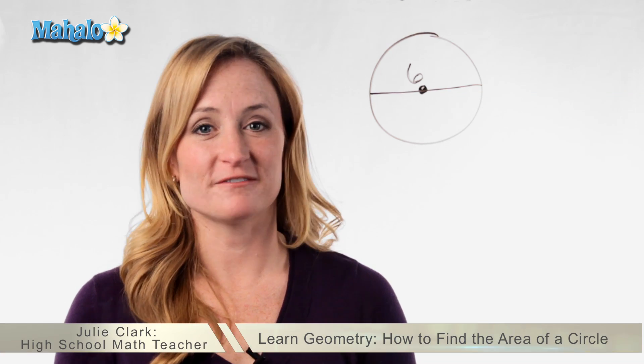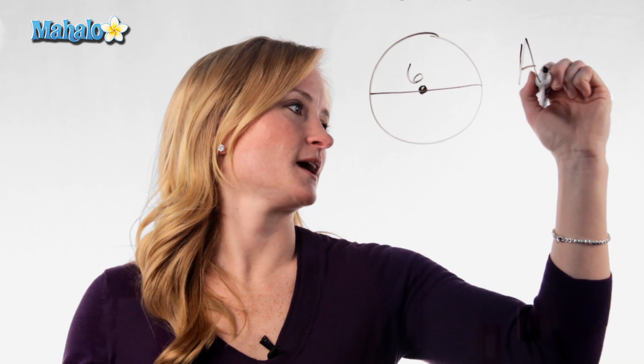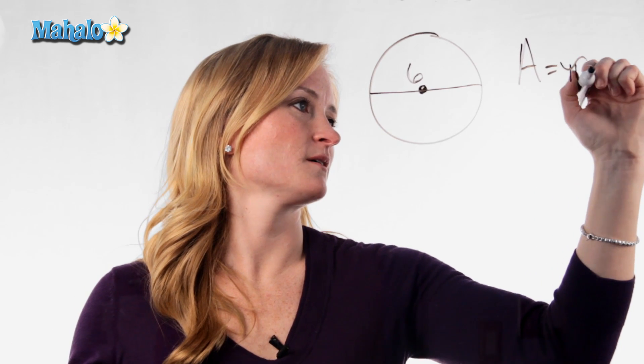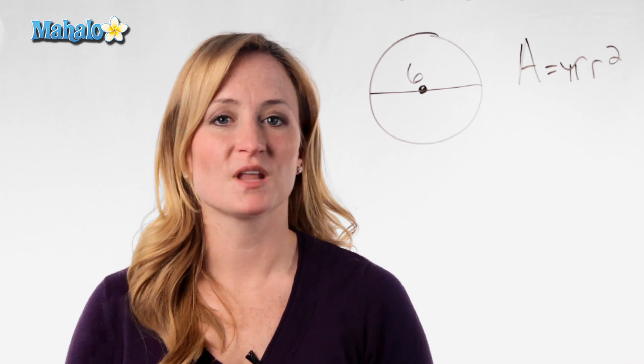Hey, this is Julie with Mahalo.com and today I'm going to teach you how to find the area of a circle. The formula for the area of a circle is A equals pi radius squared.